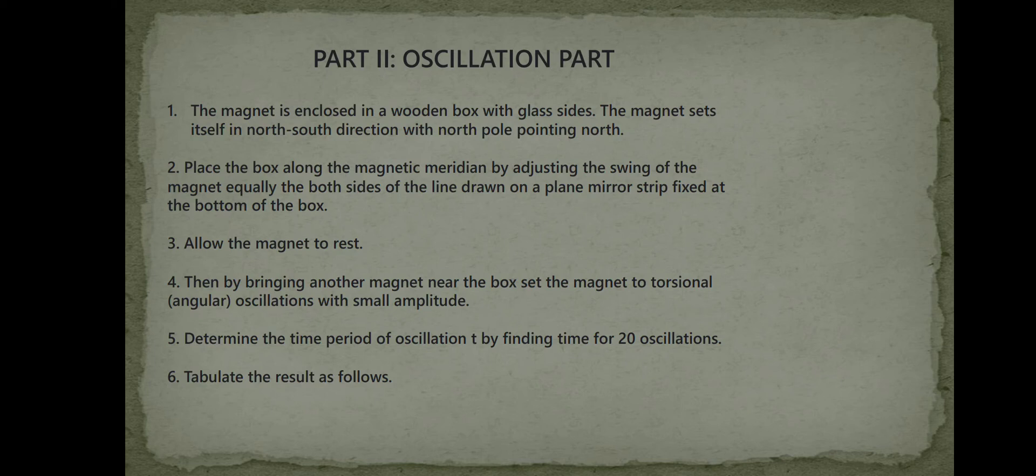Then by bringing another magnet near the box, set the magnet to torsional oscillations with small amplitude. Determine the time period of oscillation T by finding time for 20 oscillations. Tabulate the result as follows.